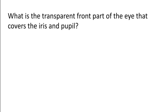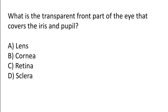What is the transparent front part of the eye that covers the iris and pupil? Options: lens, cornea, retina, sclera. The correct answer is option B — cornea is the transparent front part of the eye that covers the iris and pupil.